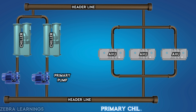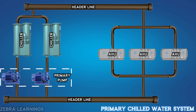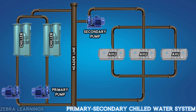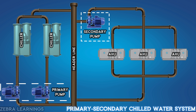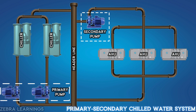In the primary chilled water system, we only use a primary pump to circulate chilled water between the chiller and the AHU. In the primary secondary chilled water system, we use both a primary pump and a secondary pump to circulate chilled water between the chiller and the AHU.